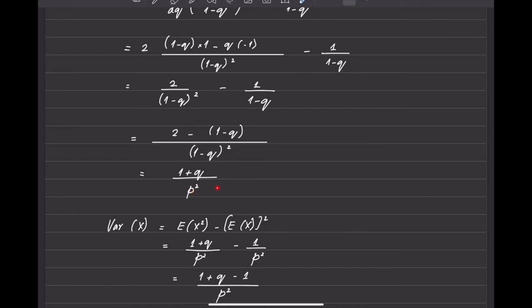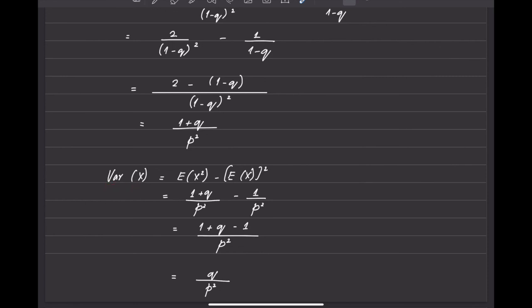So E[X²] equals (1 plus q) upon p squared. To find the variance I use the formula Var(X) equals E[X²] minus (E[X])². E[X²] is (1 plus q)/p², and E[X] is 1/p so (E[X])² is 1/p². Simplifying the two terms gives q upon p squared. Hence for a geometric probability distribution, the variance is q upon p squared.